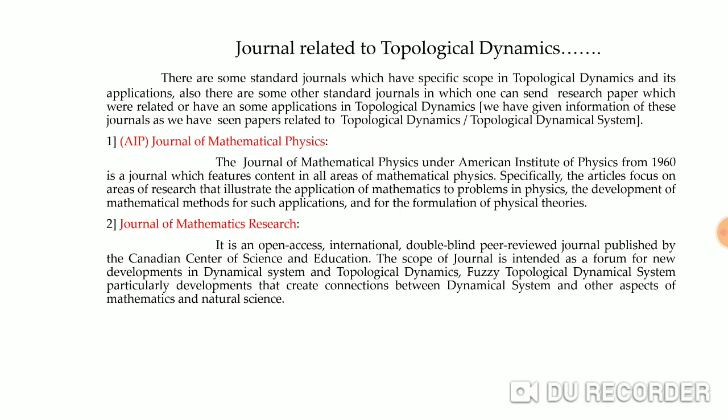The next journal is the Journal of Mathematics Research, an open-access international double-blind peer-reviewed journal published by the Canadian Center of Science and Education, having scope covering topological dynamical systems, dynamics, topological dynamics, and fuzzy topological dynamical systems. As you can see, research has now reached the intersection of fuzzy mathematics and fuzzy topology along with topological dynamical systems, giving rise to fuzzy topological dynamical systems.